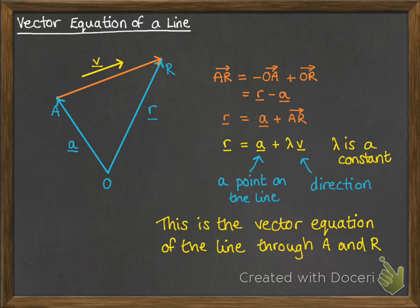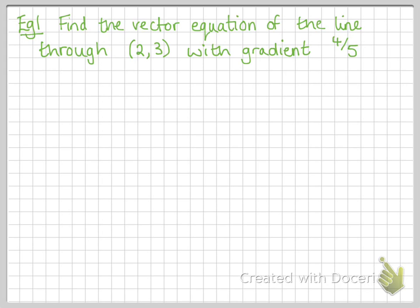So, we have a point and a direction, and then lambda would tell us how much of that direction we've travelled, so we can know the length of the line if we need it. Okay, so an example. We want to find the vector equation of the line that goes through the point 2, 3 with a gradient of 4 fifths. So, let's draw what that looks like. Here's our point. We've got a gradient of 4 fifths, which means if you think about rise over run, it's going across by 5 and up by 4. So, our vector equation looks like this.